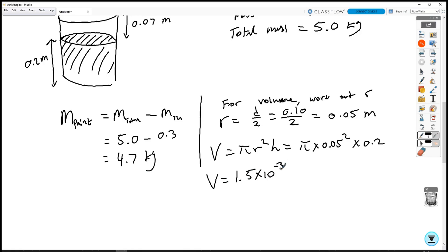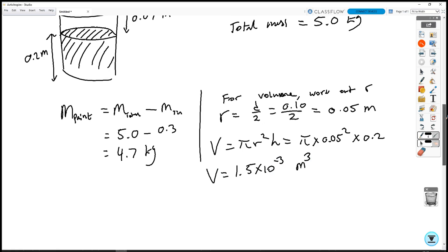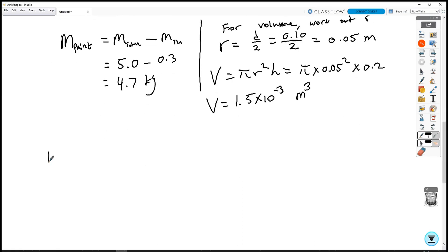1.5 times 10 to the minus 3 meters cubed. And then finally, for density, rho equals mass over volume. So we do 4.7 divided by 1.5 times 10 to the minus 3. That should give us about 3.1 kilograms per meters cubed.